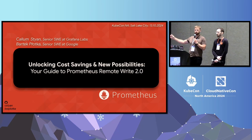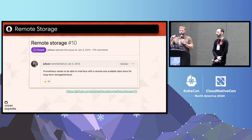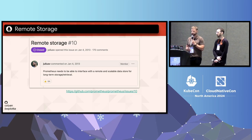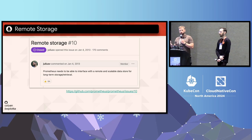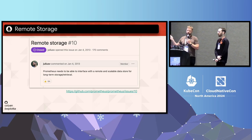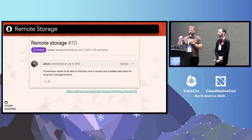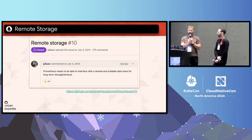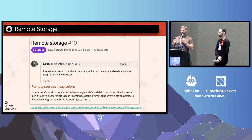Let's start with a short introduction to Prometheus remote write protocols. The primary role of Prometheus, if you're not familiar, is to allow you to instrument, collect, store, and query all your metrics, and then do some kind of work on top of that — for example, alerting, dashboarding, and so on. Prometheus also comes with remote storage interfaces. From the very beginning, developers like Julius Volts, eleven years ago at issue number 10, were thinking about how Prometheus could integrate with different databases like InfluxDB and OpenTSDB.